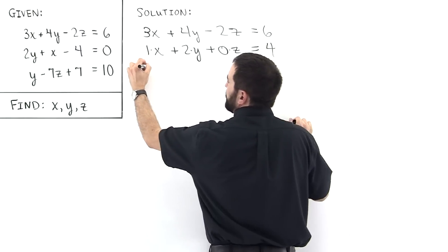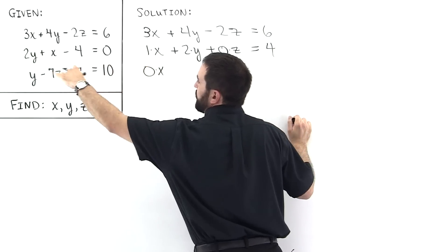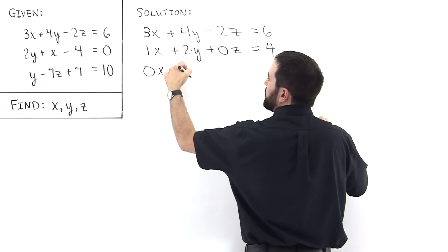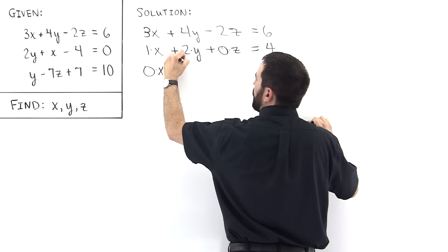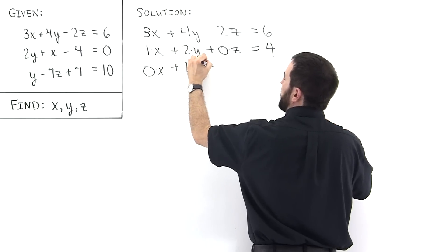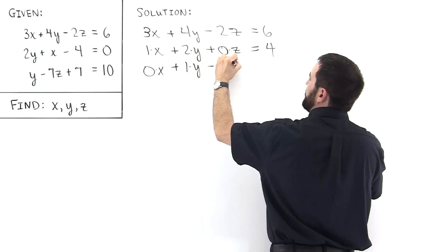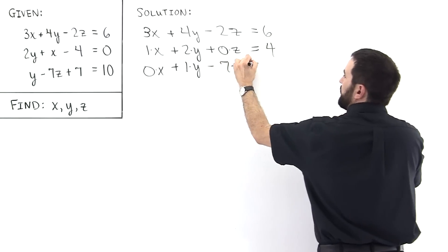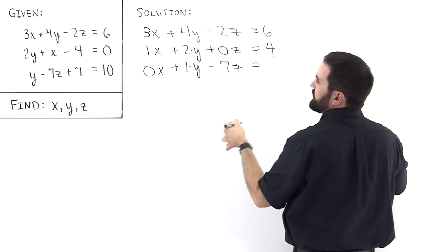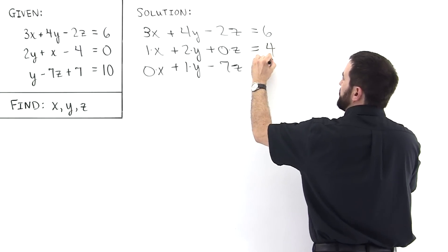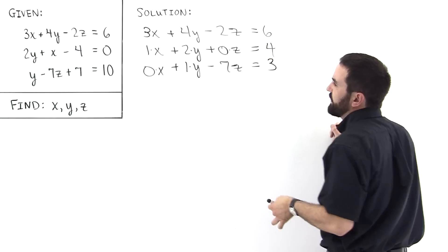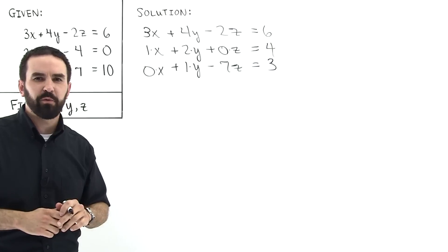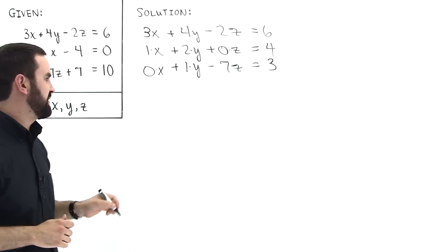Then we have 0 times x, because there's no x in this equation, plus 1 times y minus 7z equals — bringing the 7 over, 10 minus 7 is 3. So this system of equations can now be represented by a matrix.